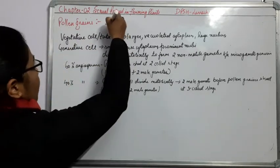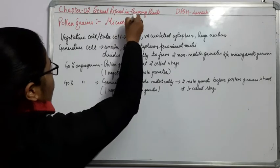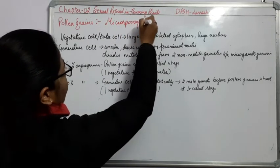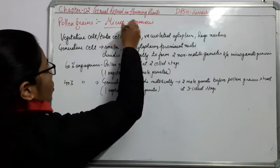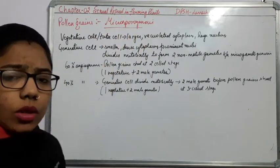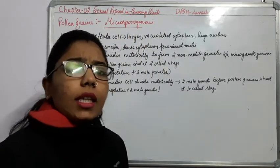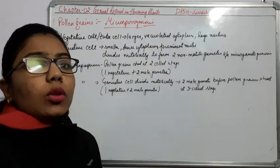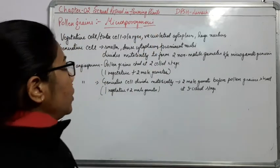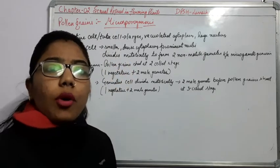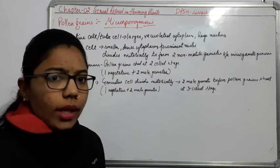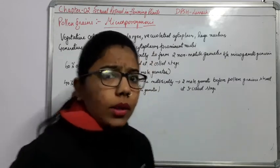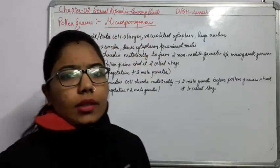What we were studying about the microsporogenesis: microspore relates to pollen grains, and genesis means to create or form something. So here we are discussing about the formation of pollen grains. As we know, we were discussing about the sexual reproduction in flowering plants.